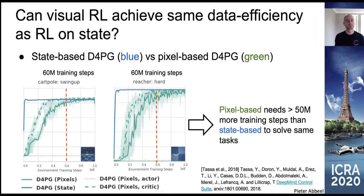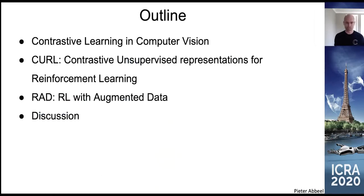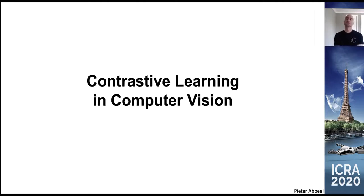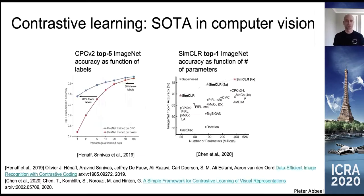Because intrinsically, if the state information is somewhere in the pixels, maybe you should be able to extract it and still learn just as efficiently as if somebody had presented state in a compact form to you. So let's take a look at how we might get there. We're going to start with some results in contrastive learning in computer vision, then do something quite similar in reinforcement learning under CURL.